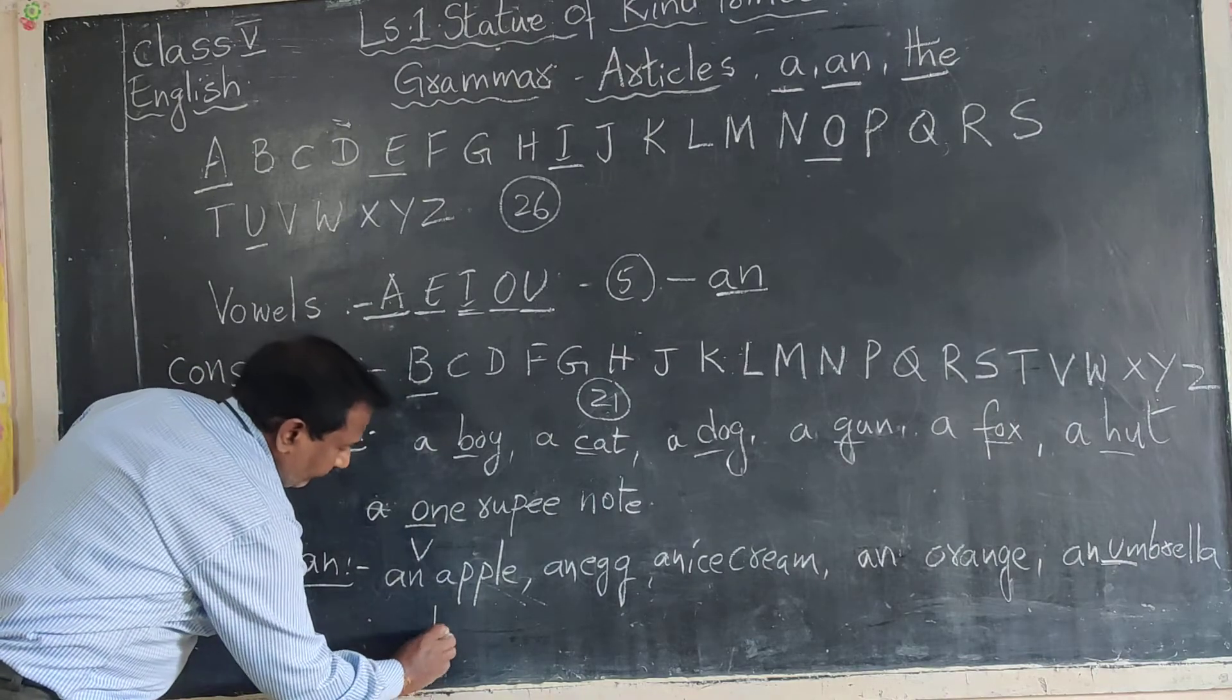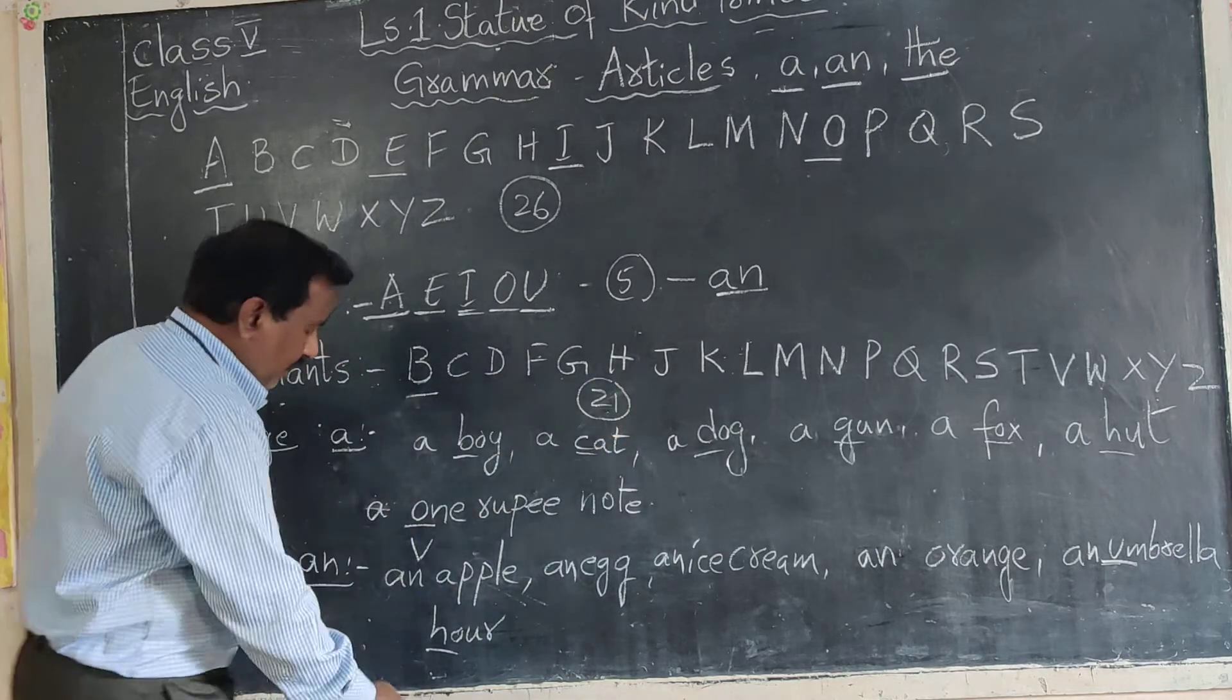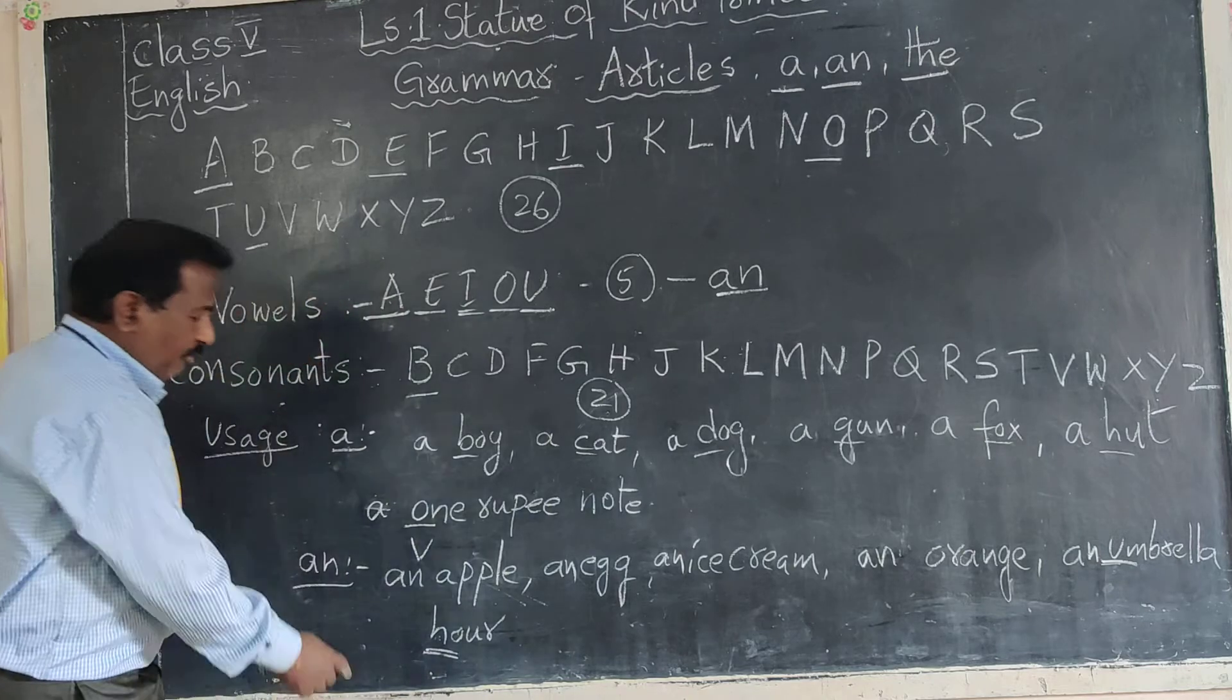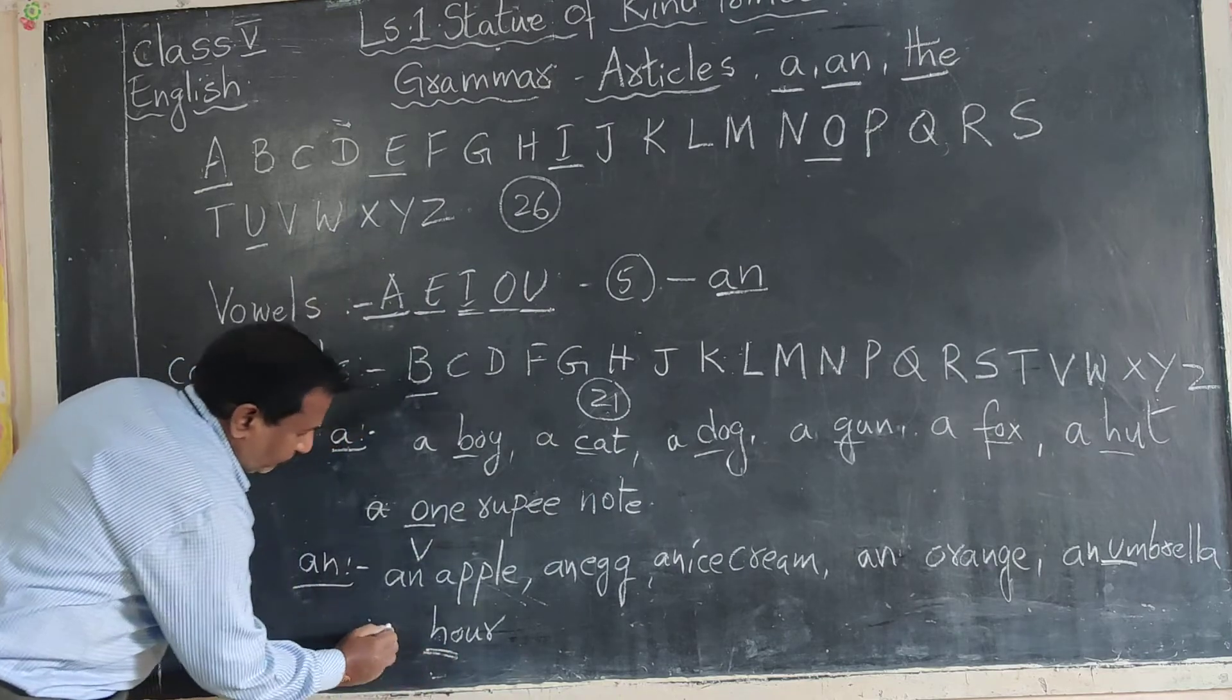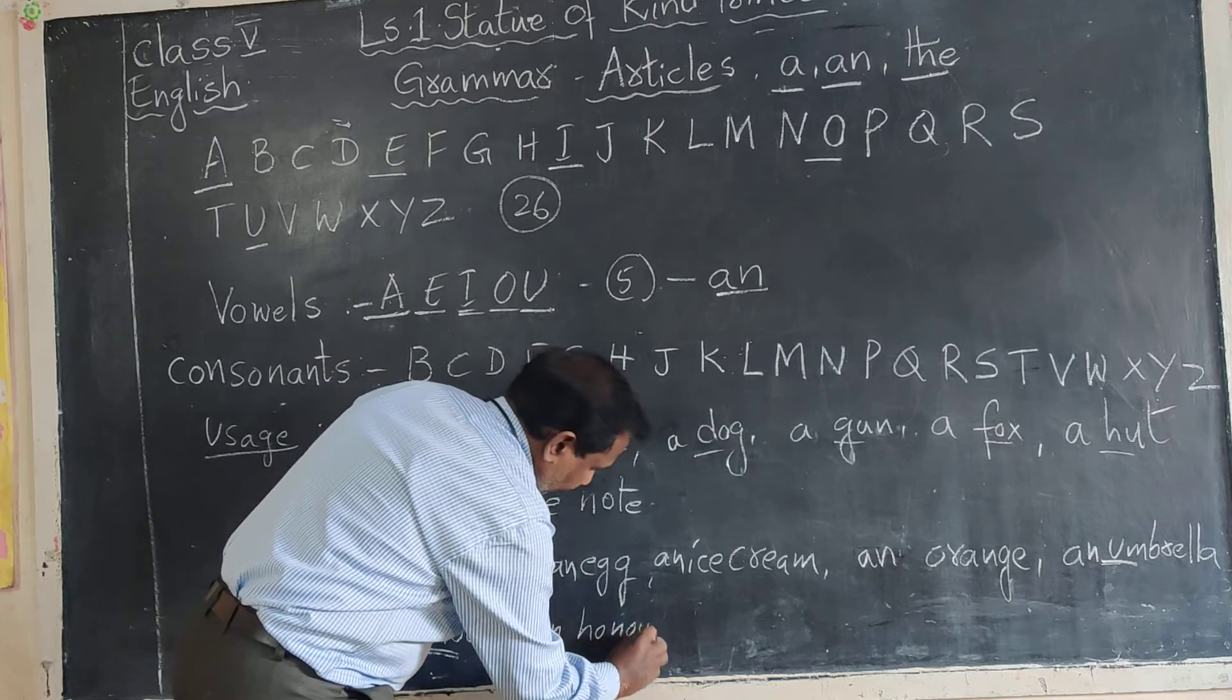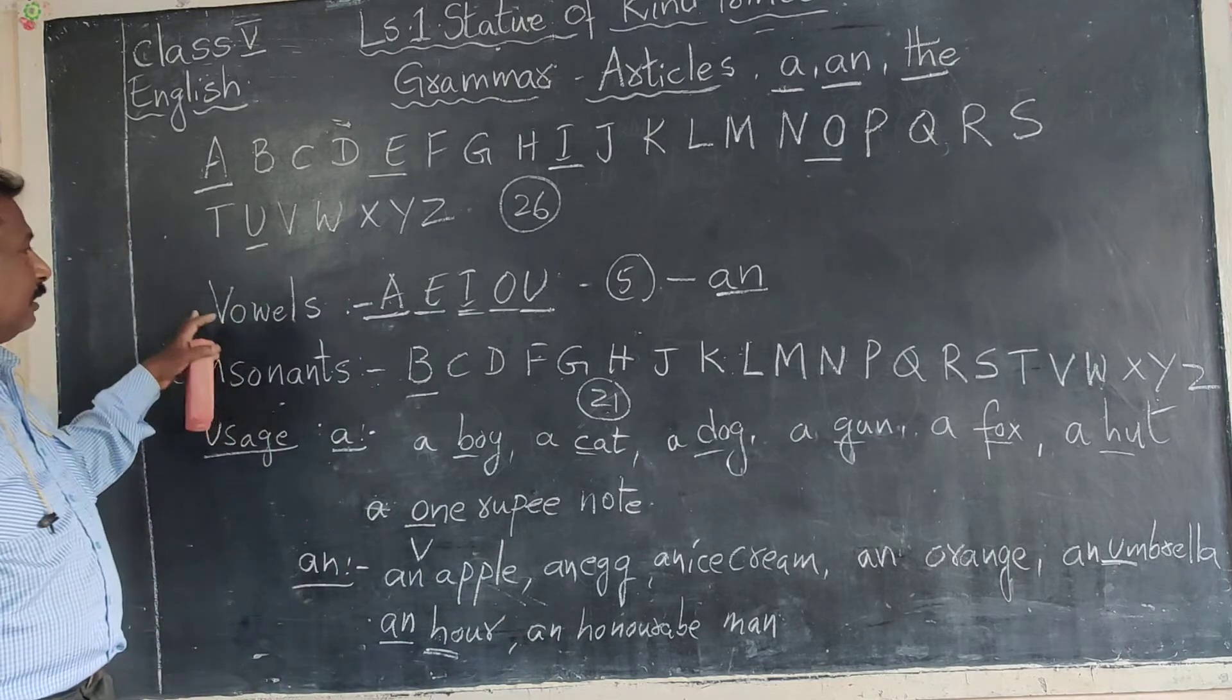And not only that, see some letters like H. H is consonant, but here H silent words - unstressed H are silent words. Here we don't say h-our, we say our. So here H silent words, before also we write An: an hour, an honourable man or an honourable person. See, here H is silent. Children, these are the rules to know how to use the articles A and An.